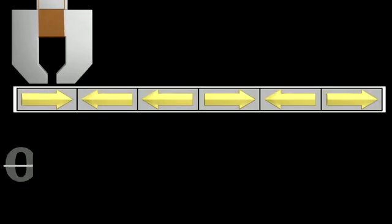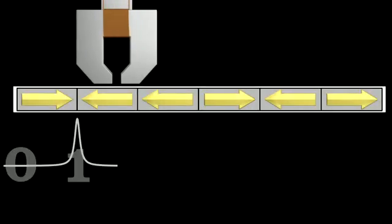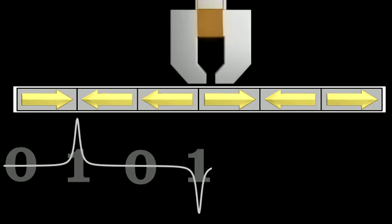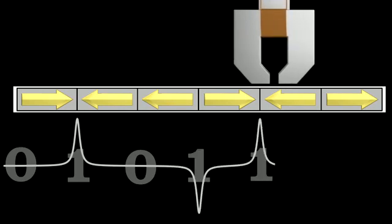So, as the head passes a section where the polarity has changed, it records a voltage spike. The spikes, both negative and positive, represent a one, and where there is no voltage spike, corresponds to a zero.